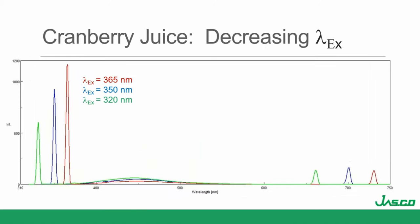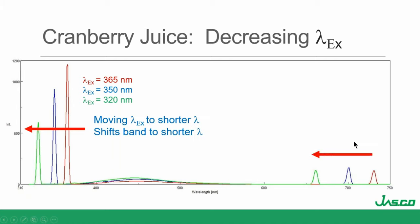We're going to run the scans at different excitation wavelengths: 365, 350, and 320 nm. As I decrease the excitation wavelength, notice that the Rayleigh scatter bands shift with it — as does the second order Rayleigh. We can see another band — let's zoom in.